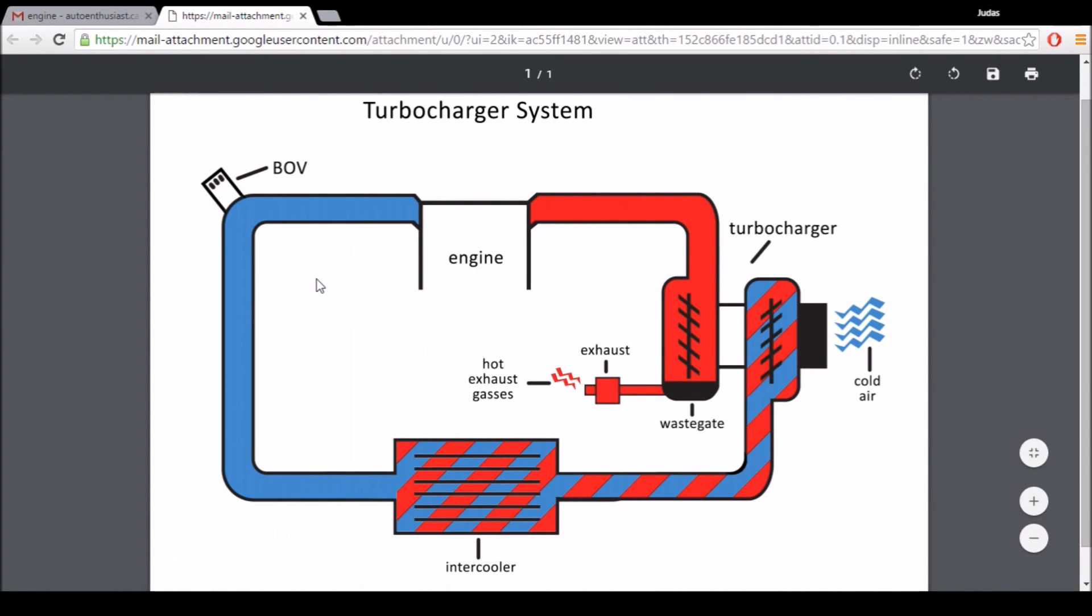So in a quick synopsis of how a turbocharger system works, there are four main components. There's the actual turbocharger, the wastegate on the turbocharger, the intercooler, and the blow-off valve. The engine creates these hot exhaust gases. They run through the turbocharger, begin the turbine spinning.